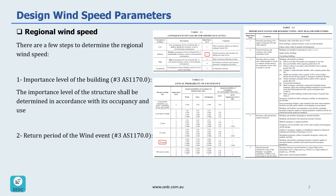Now let's calculate our regional wind speed. There are a few steps to determine it. The first step is to identify the importance level of the structure, which must be determined in accordance with its occupancy and use. The second step is to know the return period of the wind event. So let's look at table 3.1, which gives the consequences of failure for importance levels.